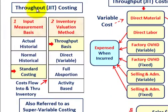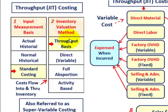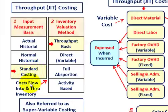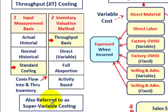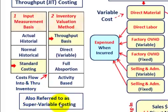What we're going to be going over here is throughput costing, or what they might refer to as just-in-time costing or JIT costing. It's one of the inventory valuation methods in cost accounting. As far as an input measurement, we're probably using standard costing for determining the cost that flows into and through this inventory. It would also be referred to as super variable costing.